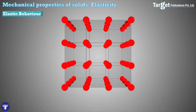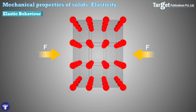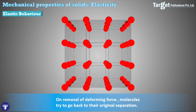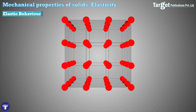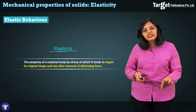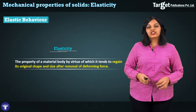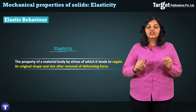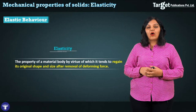When you apply an external deforming force, that is your action, and as a reaction the solid sets up internal forces. Once you remove the deforming force, these internal forces cause the molecules to try to return to their original positions, and therefore the solid as a whole tries to regain its original size or shape. This property — by which a material body tends to regain its original shape and size after removal of a deforming force — is called elasticity.